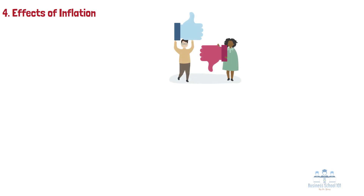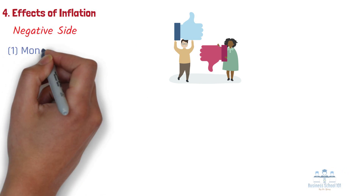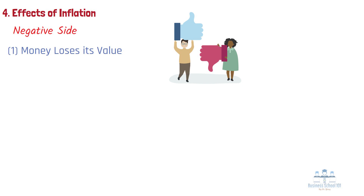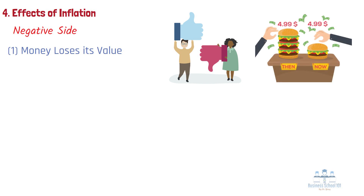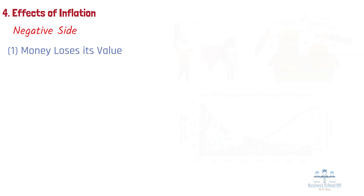Inflation can be construed as either a good or a bad thing, depending upon which side one takes and how rapidly the change occurs. Starting with the negative side: Number 1, Money Loses Its Value. As the prices of products go up, money loses value. Looking at the value of the US dollar between 1980 and 2019, the dollar has lost over half its value. In other words, you can buy half as many goods and services with $1 as you could 30 years ago. So if you stored $1,000 under your bed in 1980, it would be worth less than $500 today.